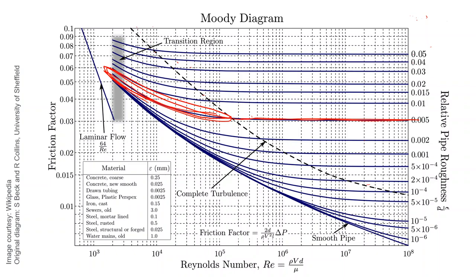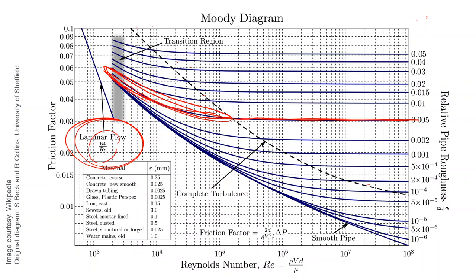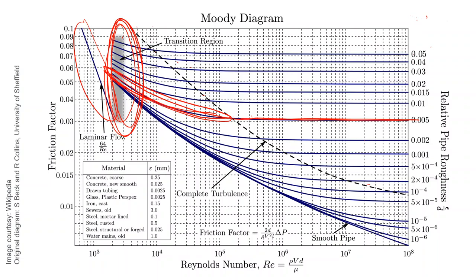Between laminar and turbulent flow there is a small transition zone, but in that zone you can still use the curves from Moody's diagram to get the friction factor value. For turbulent flow that is not completely turbulent, the friction factor is variable and must be read from the diagram.